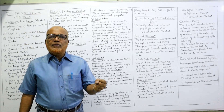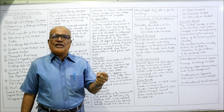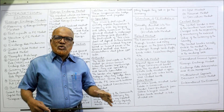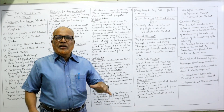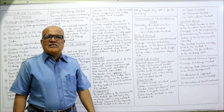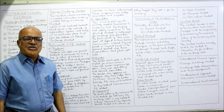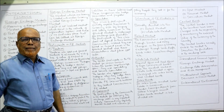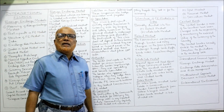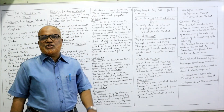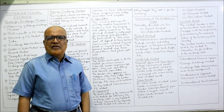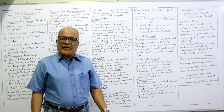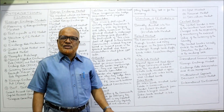Another very important participant in the foreign exchange market is the government. It is the responsibility of the government to maintain the foreign exchange rate, so the government enters the market to stabilize it. In summary, the key participants are: traders, arbitrators, hedgers, speculators, banks, and the government.